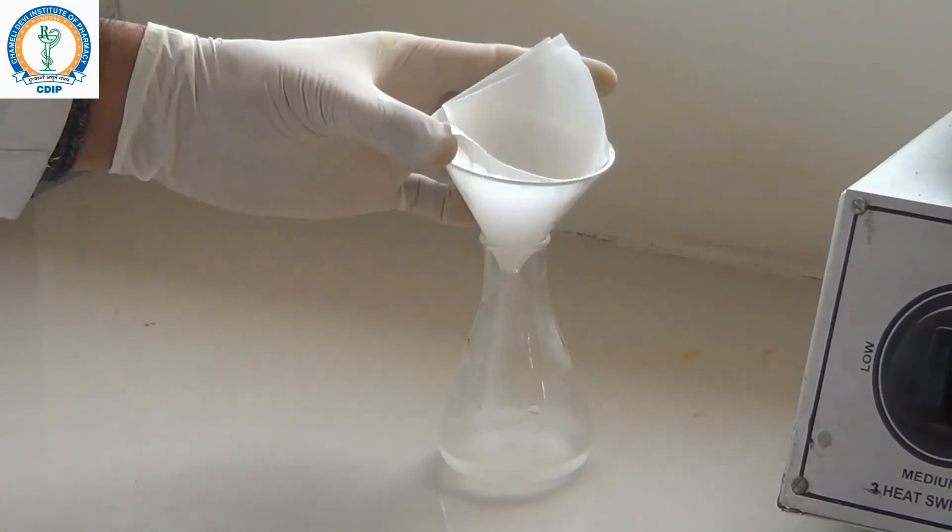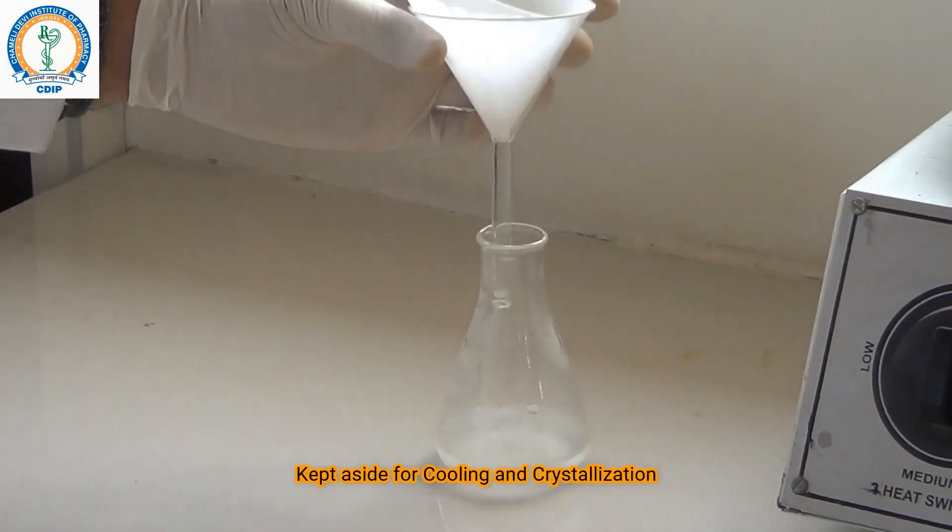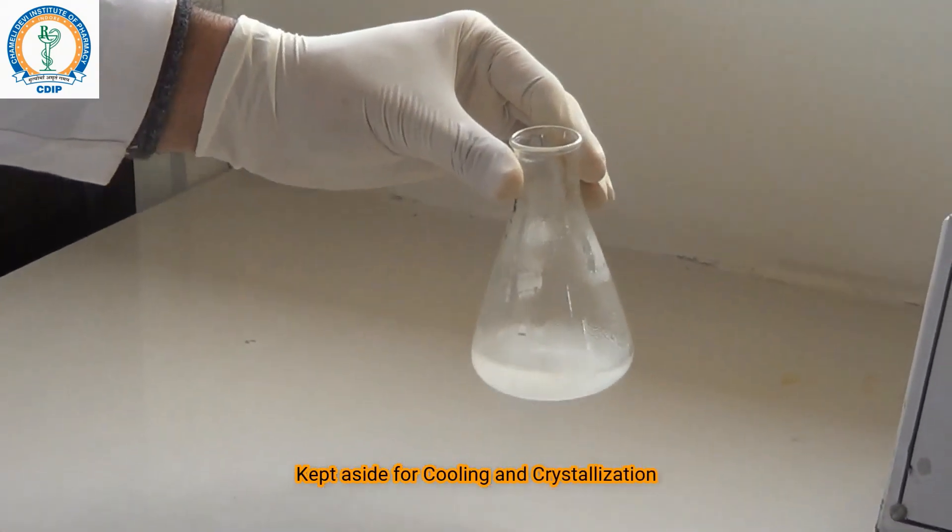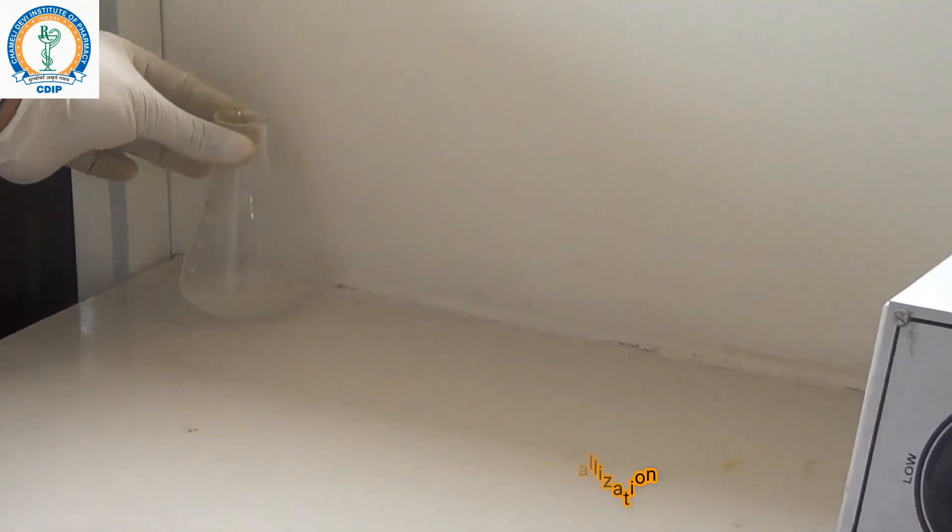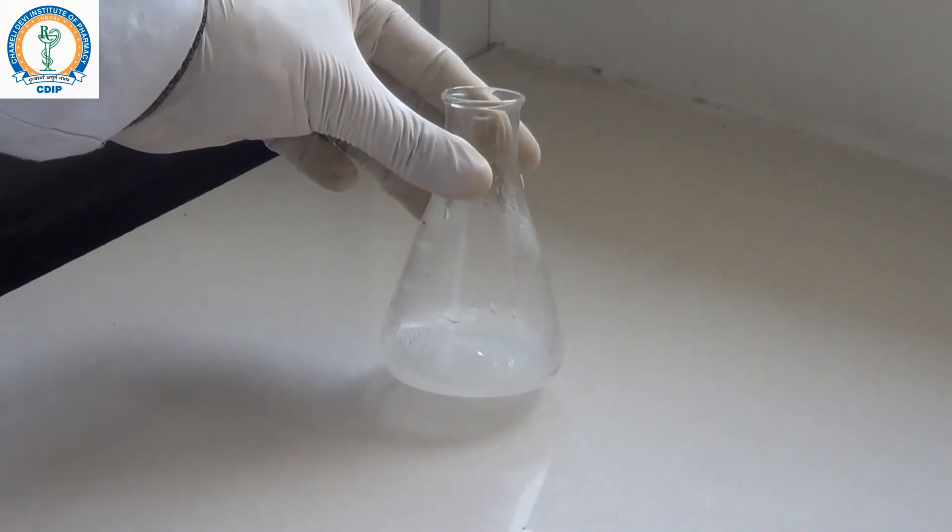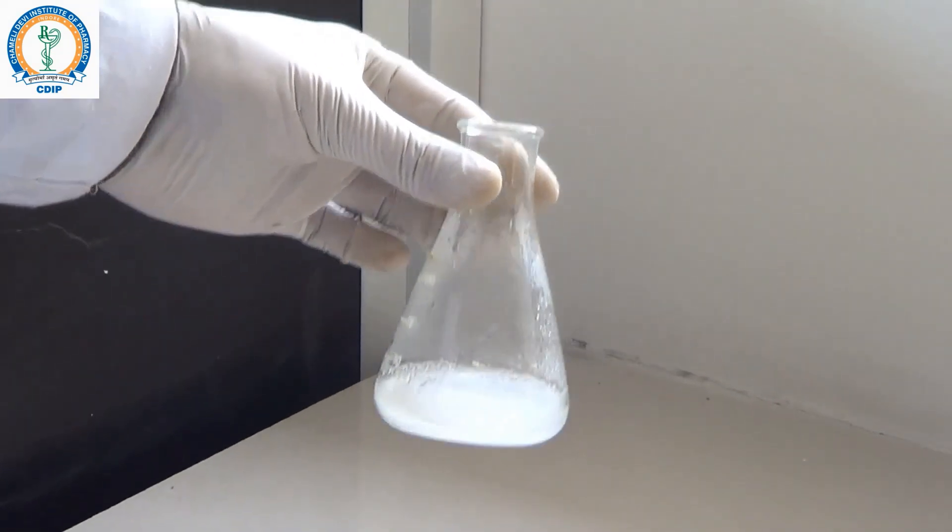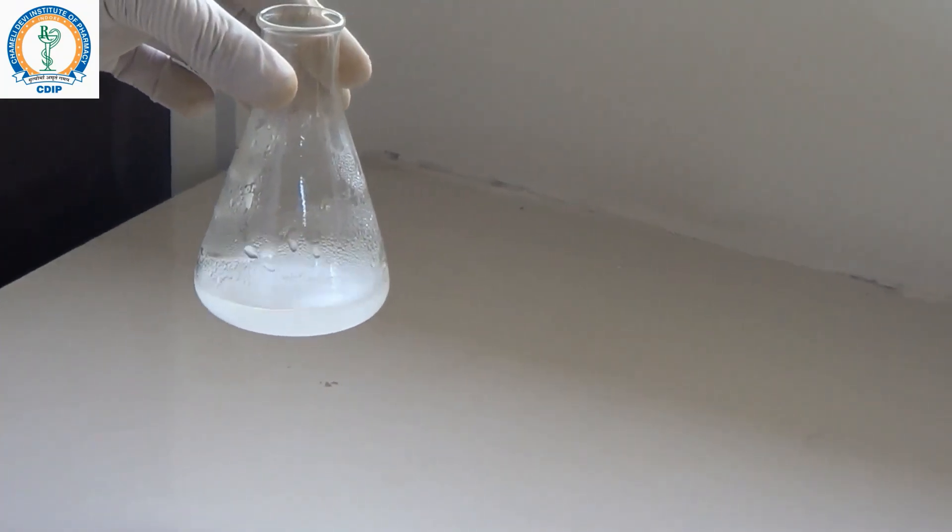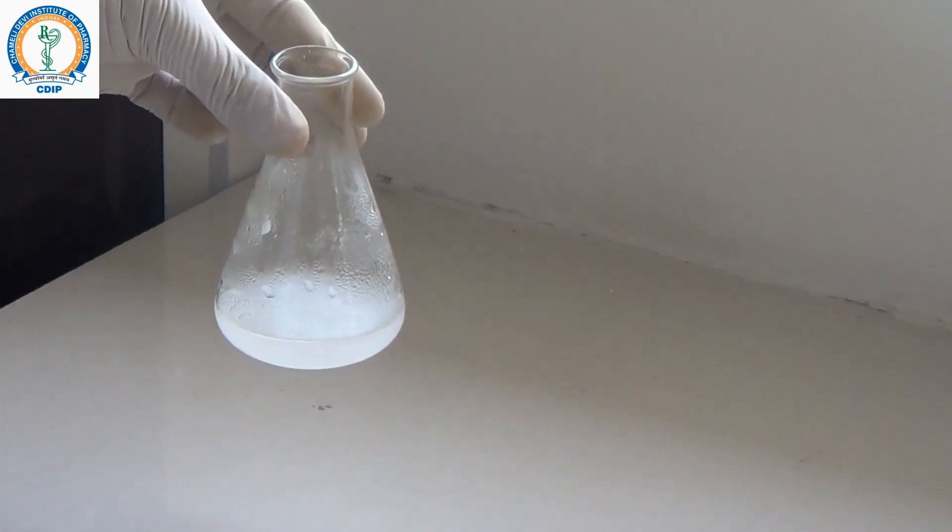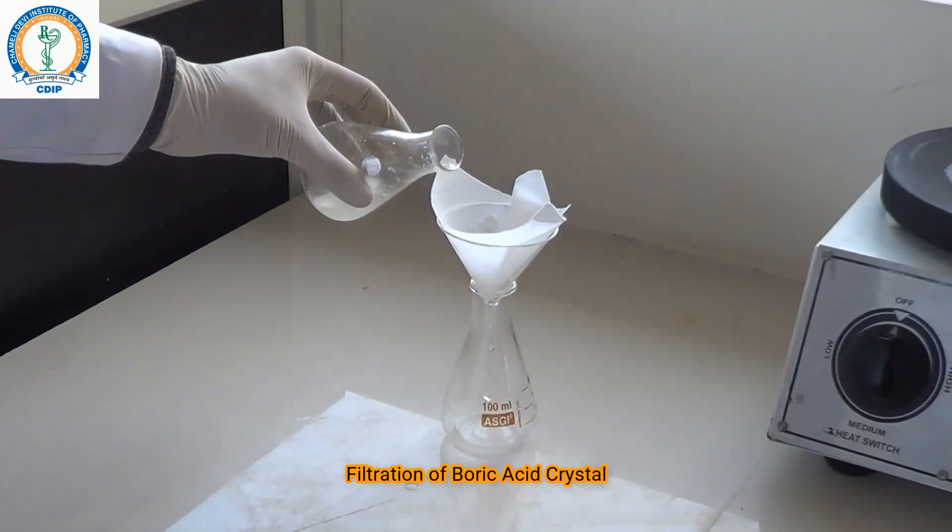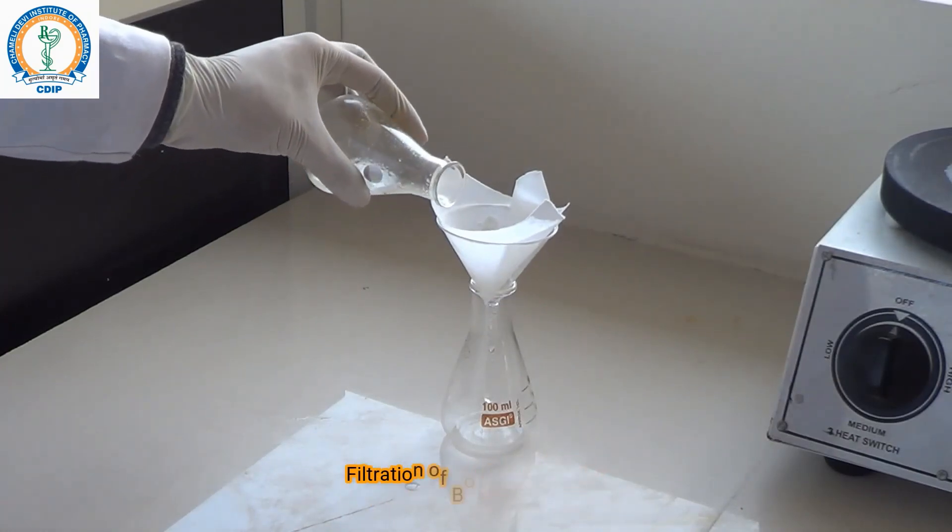Now after filtration, keep the conical flask for 30 minutes for the formation of crystals. After cooling, you can see the formation of crystals into the conical flask. After complete crystallization, filter out the crystals using Whatman filter paper.